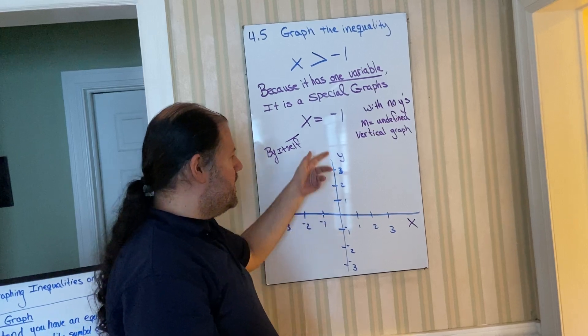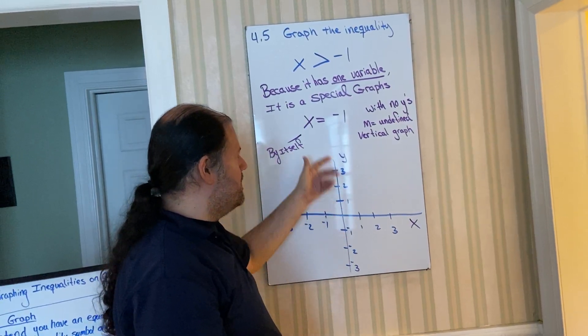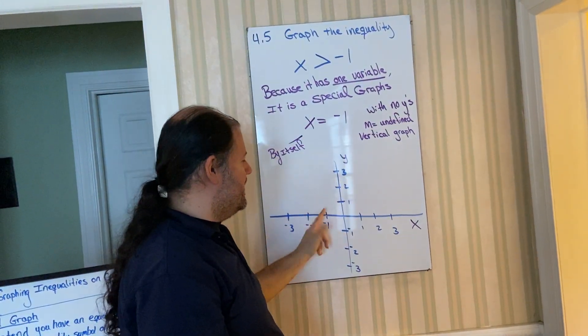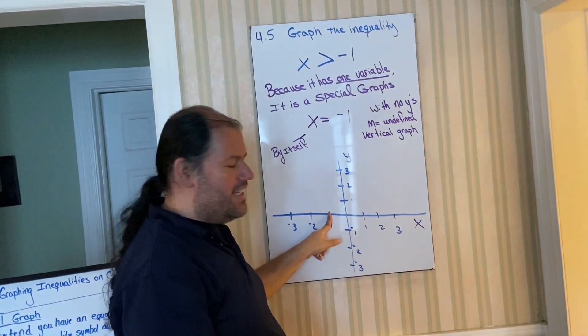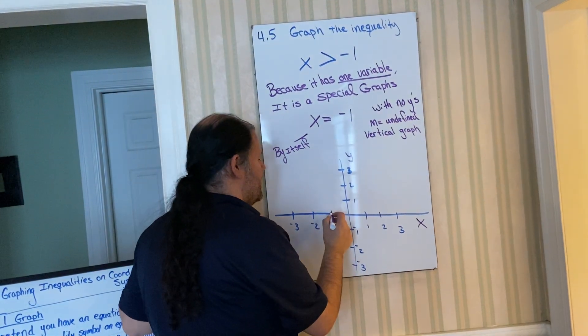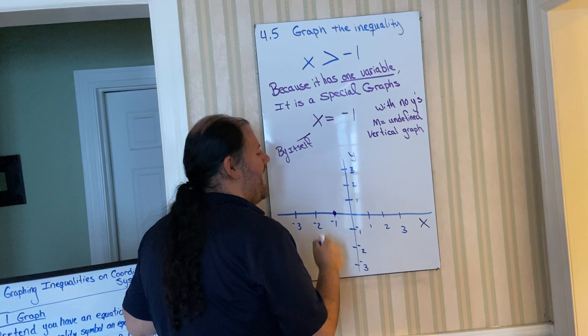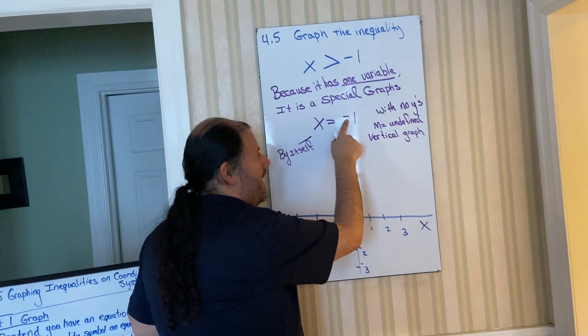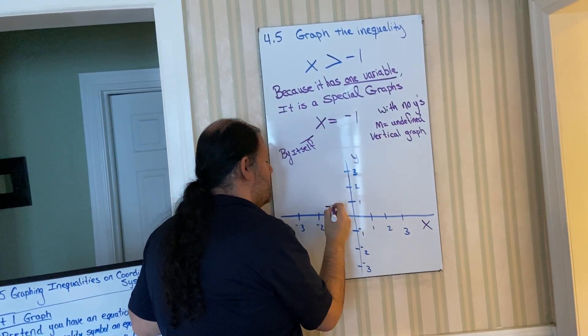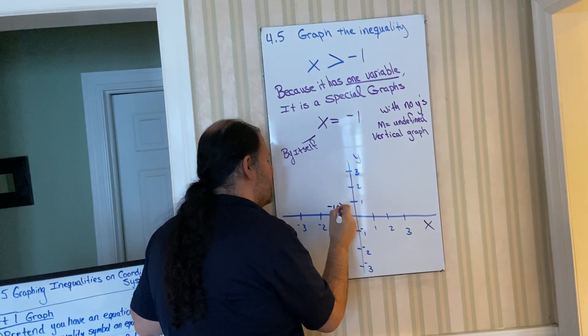Okay. Normally, we would look for y's, but because there's no y's, have to look at x. This is my intercept. It's an x-intercept, not a y-intercept because there's no y's. This would be the point negative one, zero.